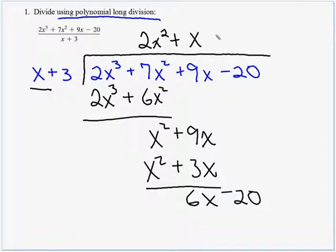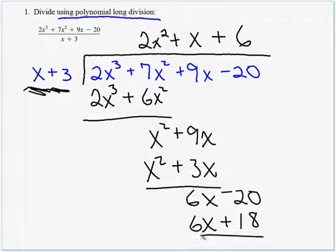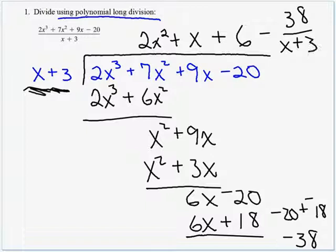Again, we want to match this 6x, so we're going to multiply by positive 6. 6 times x is 6x, and the 6 times this 3 is plus 18, and we subtract. All day in class, I saw a lot of people get this answer as a negative 2. Remember, it's minus 20 minus 18. And we would add the opposite, so we're adding two negatives, which will add up to a negative 38. So our remainder is a minus 38 over our divisor, x plus 3.